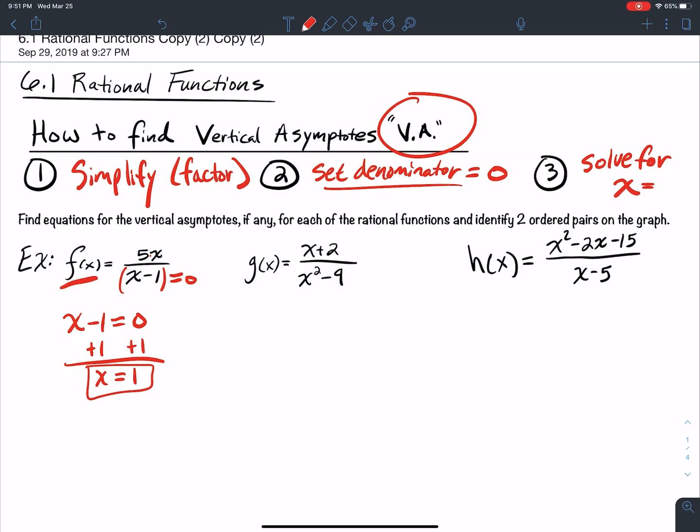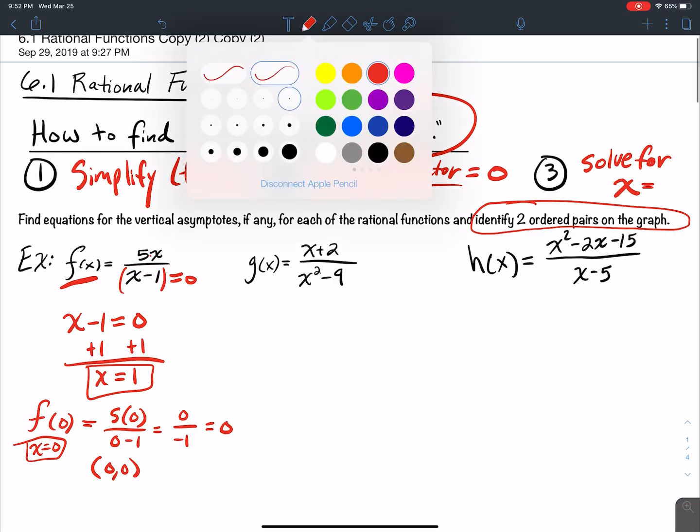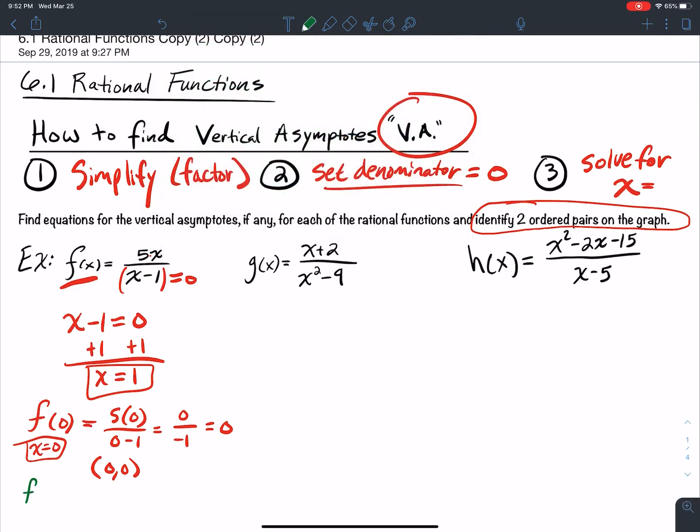Now if you were asked to find a second point on the graph, maybe you can try plugging in. I want to identify two ordered pairs that are on the graph. How do I do that? I just pick x values. So I'm going to pick x equal to zero. Plug in here. And so what do I get? 5 times 0 over 0 minus 1, that's 0 over -1. Type this in your calculator, you're going to get zero. So what's a point? Zero comma zero.